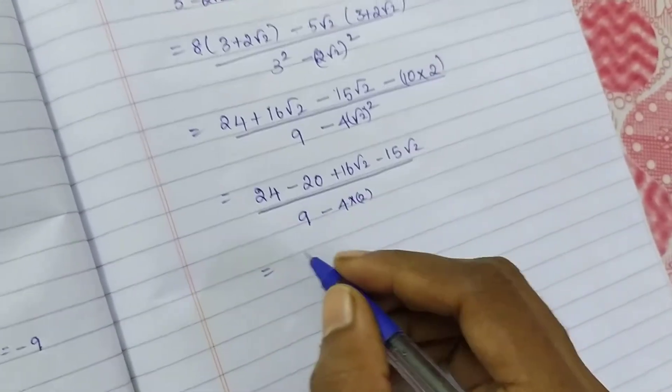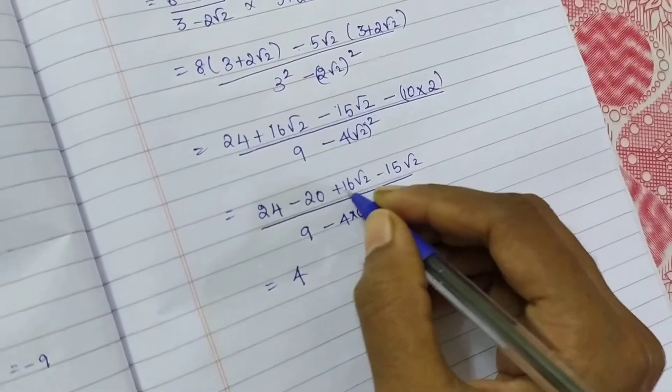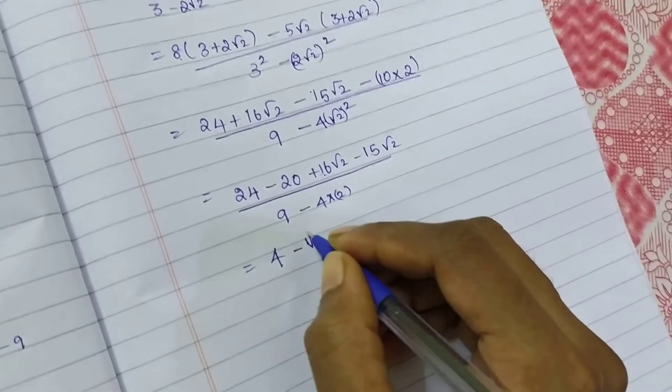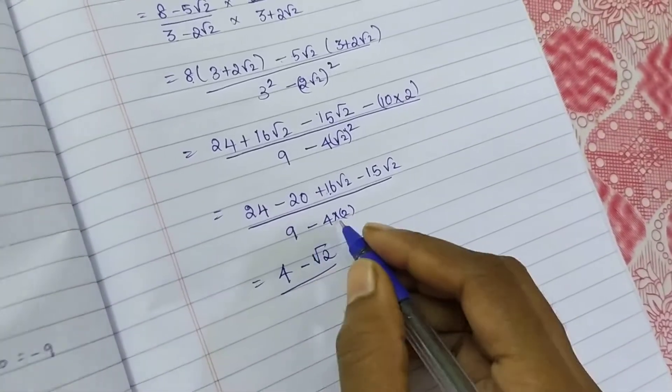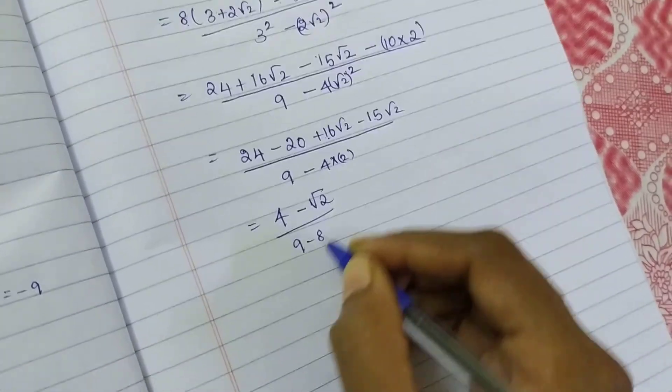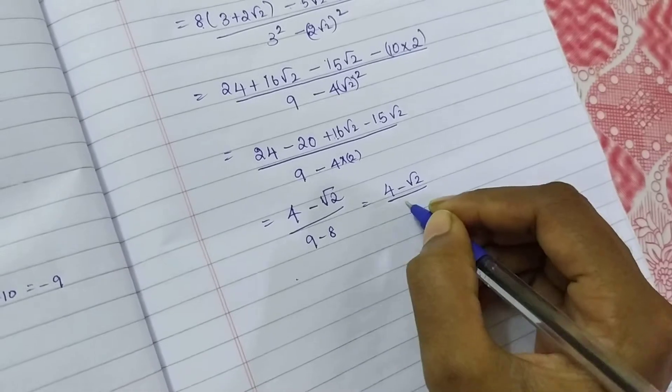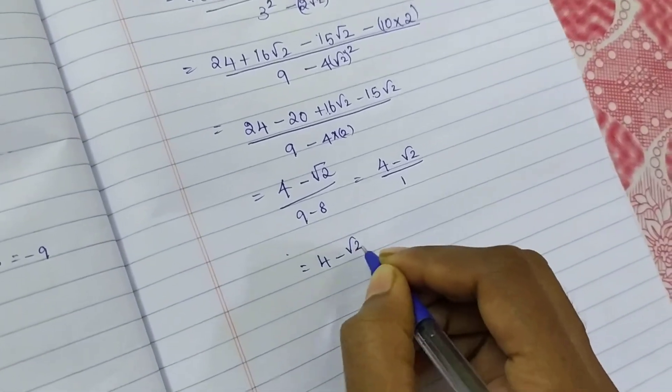So how can I write 24 minus 20? 4. So 16 minus 15, 1 root 2. So root 2. So in this place I am having 9 minus, 9 minus 8. So finally, 4 minus root 2 by 9 minus 8, 1. So I can write 4 minus root 2.